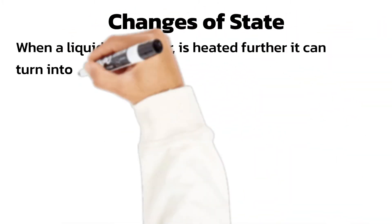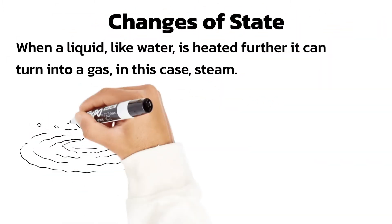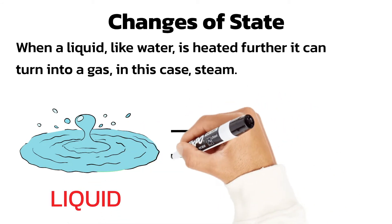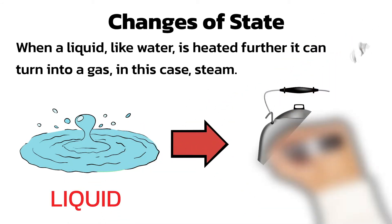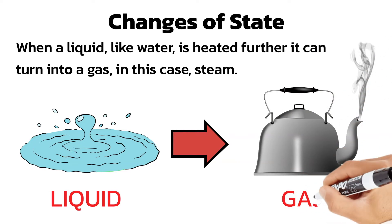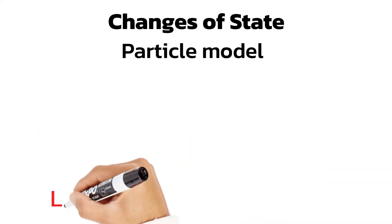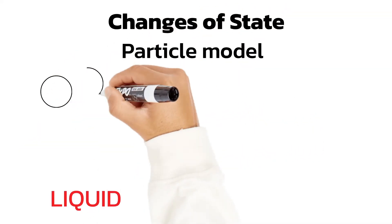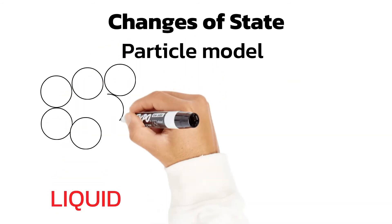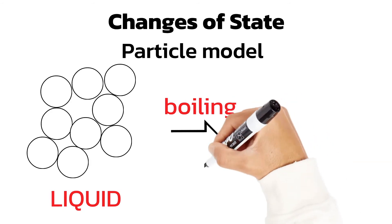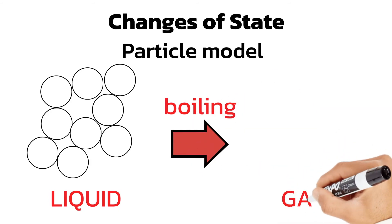When a liquid is heated further it can turn into a gas. For example, when water is heated in a kettle it can turn into steam. When a liquid turns into a gas we call this boiling. The temperature at which this happens is called the boiling point. When a liquid boils, the particles gain energy and move around faster. This additional kinetic energy will break the bonds between the particles and they will escape the liquid and spread out to become a gas.